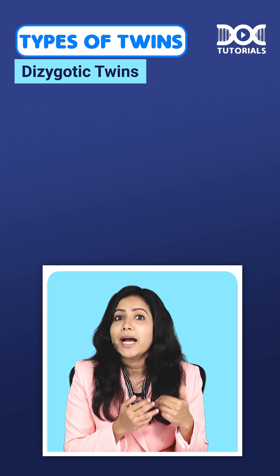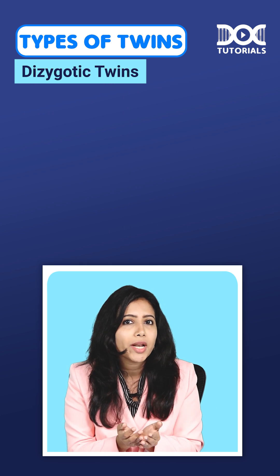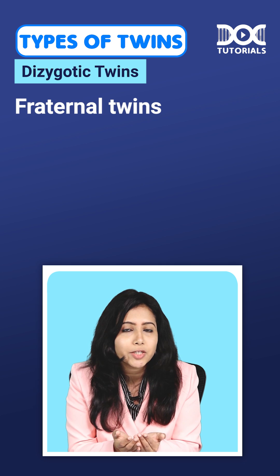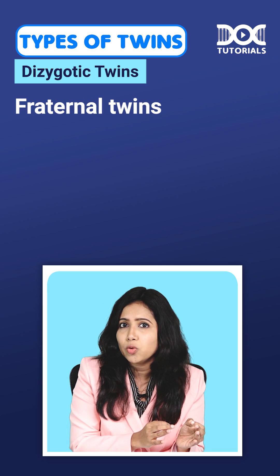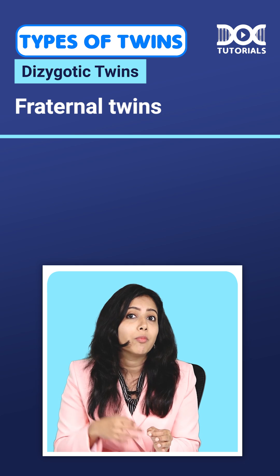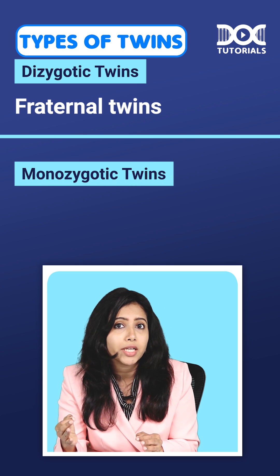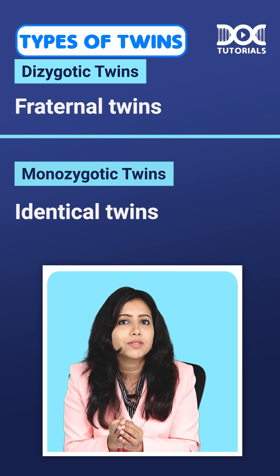Dizygotic twins are also known as fraternal twins. They are not identical — they have different blood groups and different sex. Whereas the monozygotic are usually identical twins.